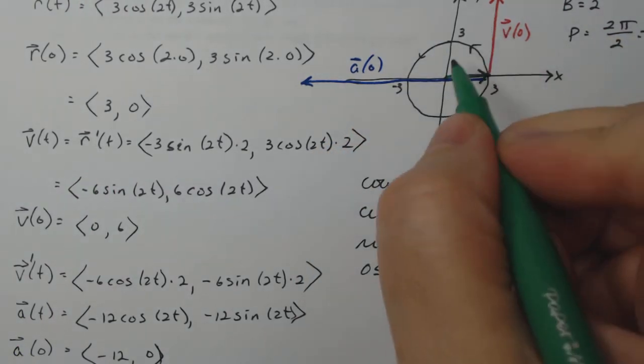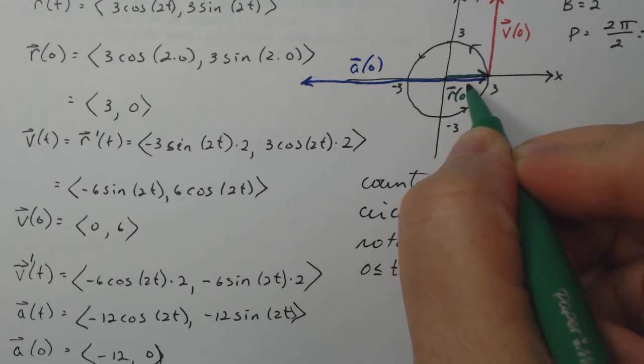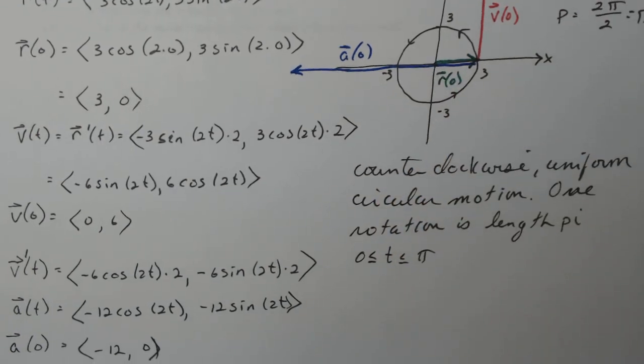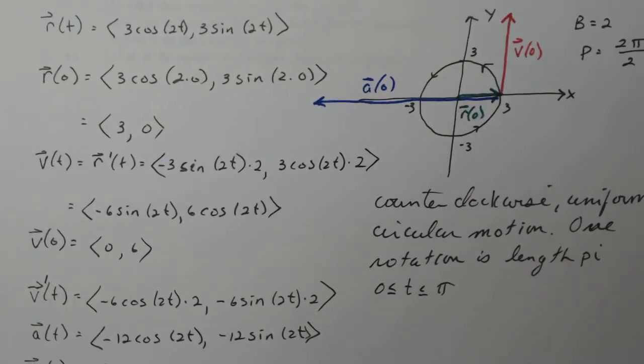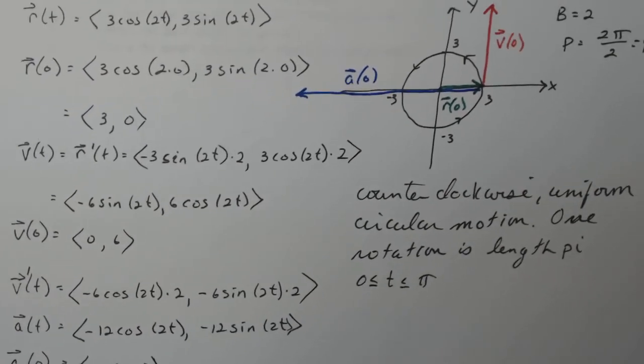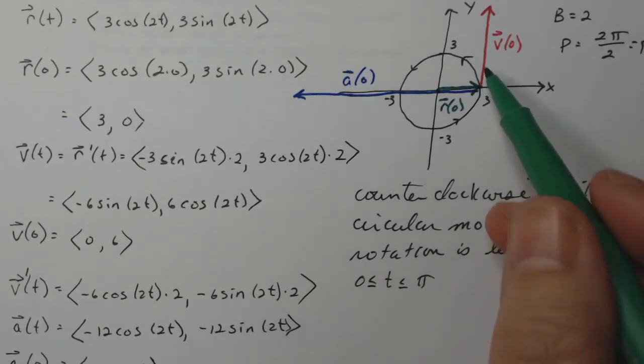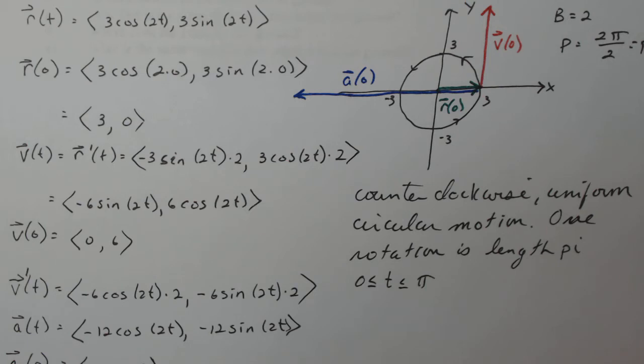So this should be zero right here. And then the green is going to be r of zero. So there's all the relationships r, v and a at a particular point t equals zero. And you can do this at any point that's on here. Zero is just easier.